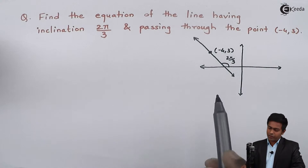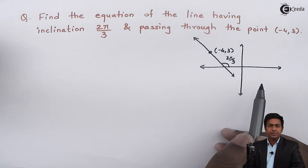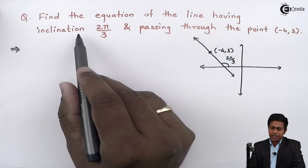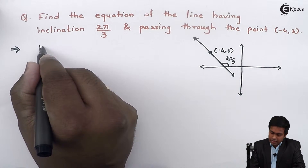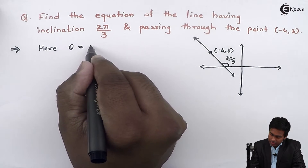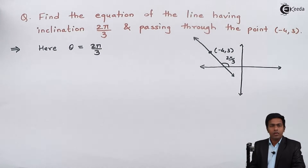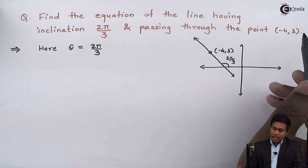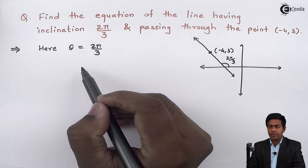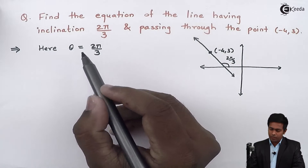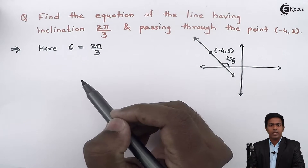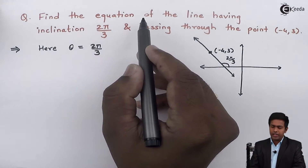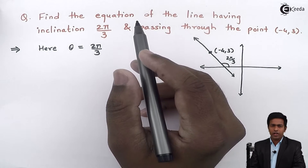So we have to find the equation of this line. Let's start with the given data. The given inclination is 2π/3; I'll assume it as theta, so theta = 2π/3. Since we have one point (-4, 3) and the inclination theta is given, we will find the slope from the given inclination and then use the slope-point form to find the equation of the line. So let's find out the slope.